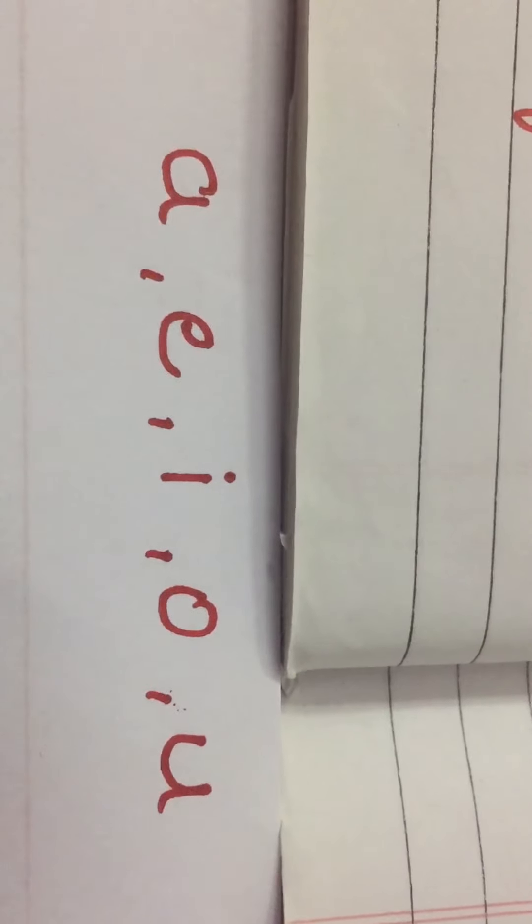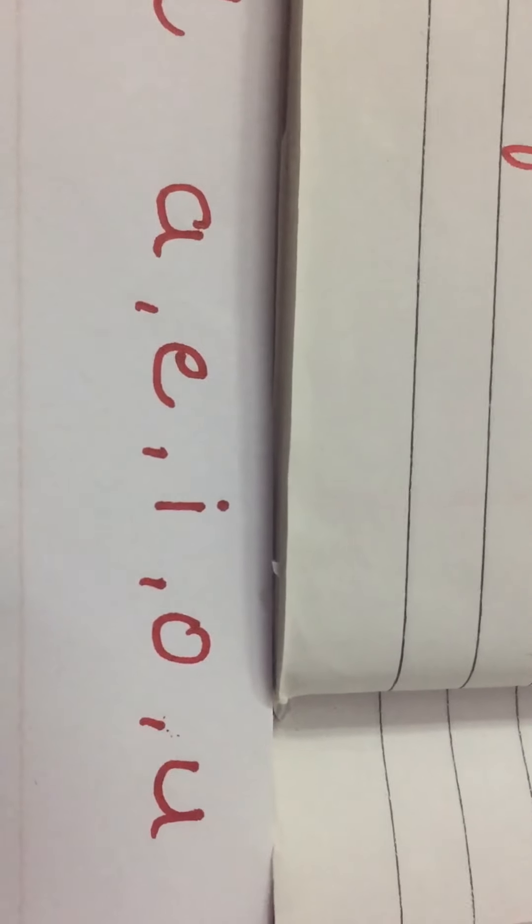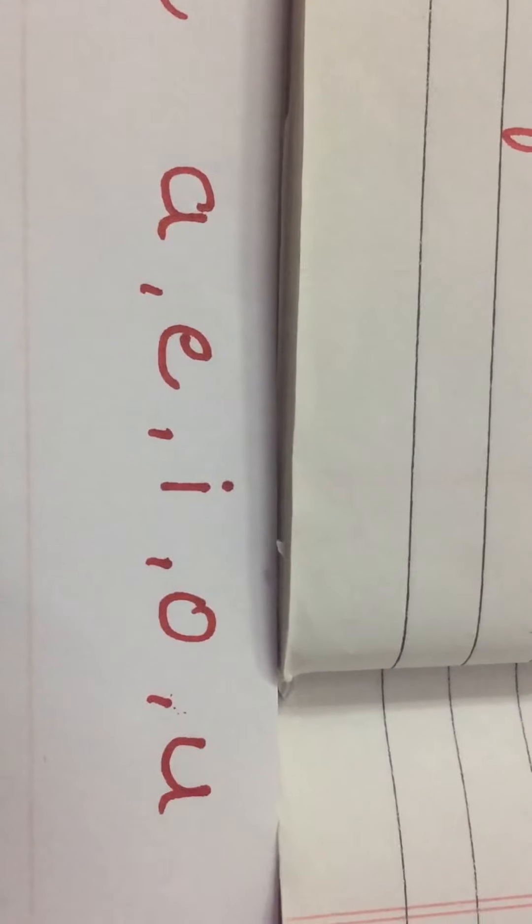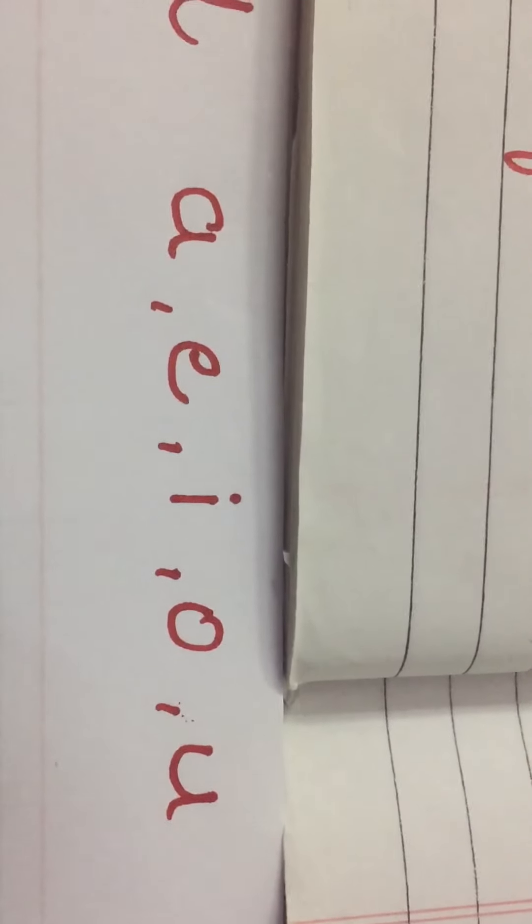Do you know what is vowel? Vowels are a, e, i, o, u. It means any word that begins with a, e, i, o, u, we can use an before them.